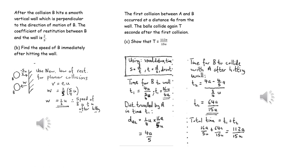We can find the time for B to get to the wall, the distance travelled by A in that same time, and hence the time it takes for B to collide with A after hitting the wall.